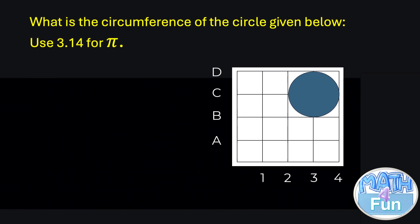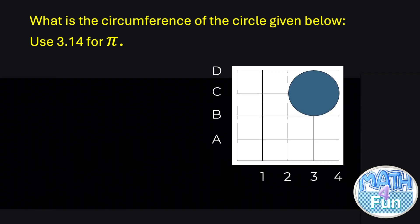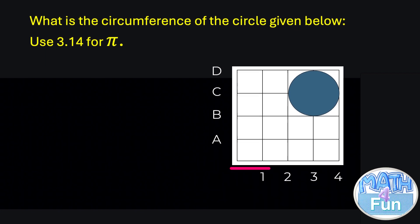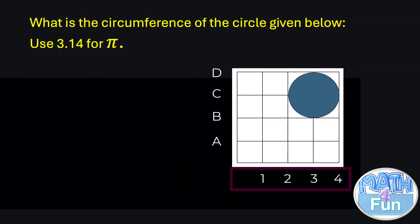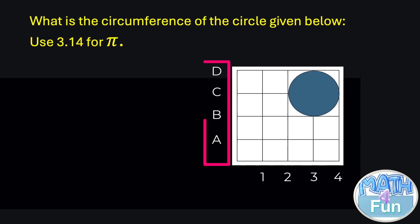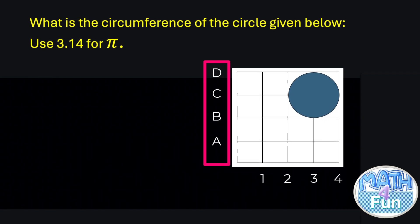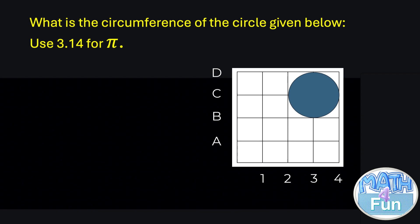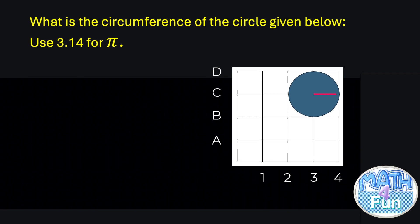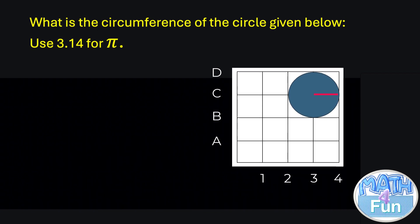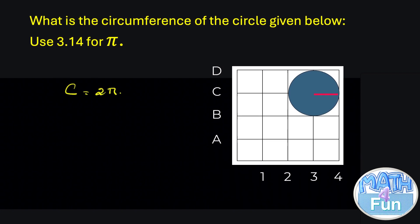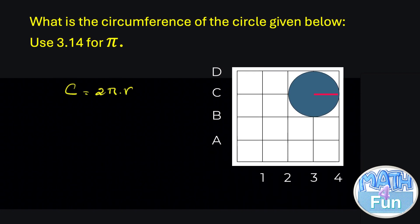Looking at the figure here, you can see that the x-axis is oriented by 1, 2, 3, 4, while the y-axis is oriented by a, b, c, d. So now we have to find the radius of this circle. Based on the formula, you know that the circumference is equal to 2πr, so we can write c = 2 times pi times r. We need the radius.